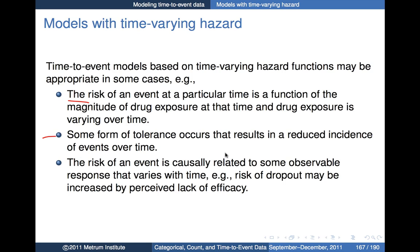Another case is where there might be some form of tolerance that results in reduced incidence of events over time. We might also want to construct a model where the risk of an event is causally related to some observable response that varies with time. For example, the risk of dropout may be increased by perceived lack of efficacy, and that lack of efficacy might be measured in terms of some particular efficacy-related measurement. If that's varying over time, then the hazard of dropout would vary over time.